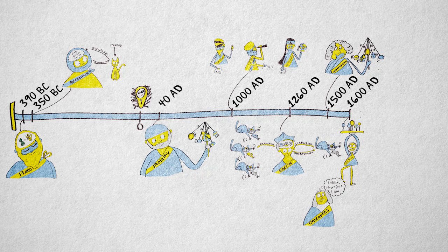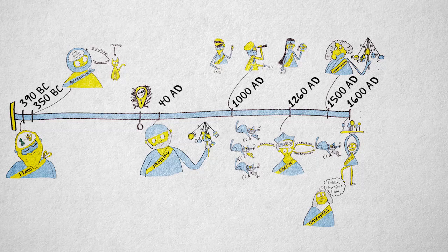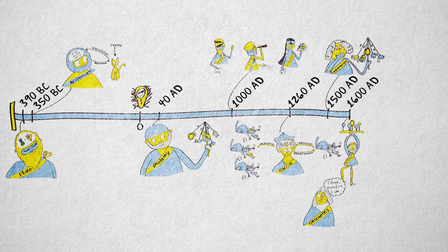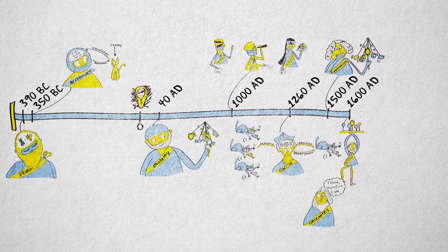René Descartes of the Cartesian coordinate system was a contemporary of Galileo. Although Descartes also rejected many of Aristotle's ideas, Descartes did agree with Aristotle that knowledge should be based on first principles.